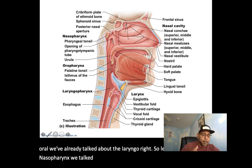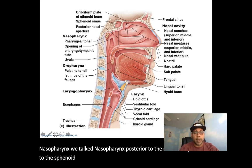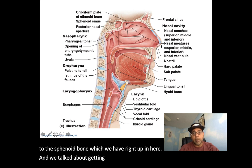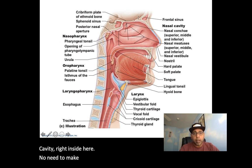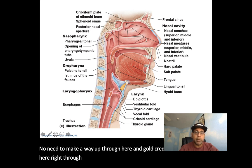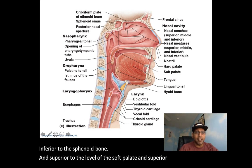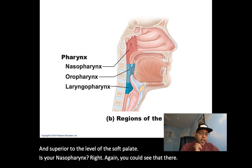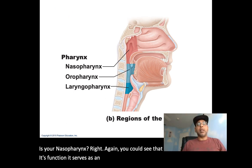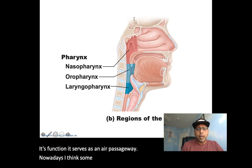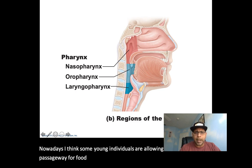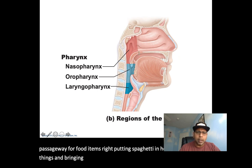The nasal pharynx is found posterior to the nasal cavity and inferior to the sphenoid bone. We discussed accessing the pituitary gland going right through this nasal pharynx cavity. Superior to the level of the soft palate is your nasal pharynx. Its function is to serve as an air passageway.